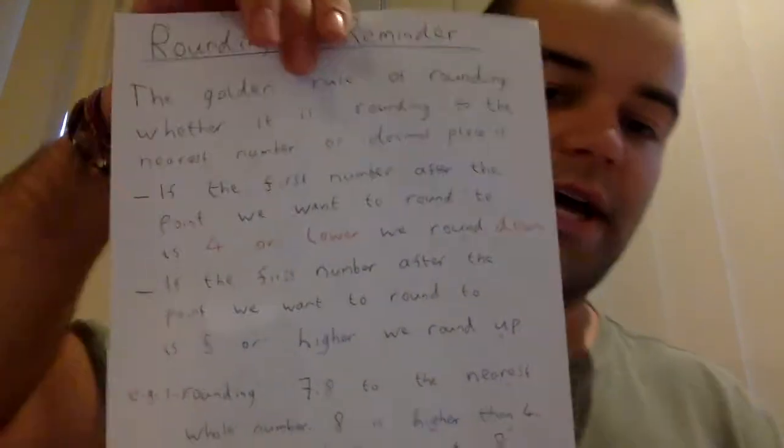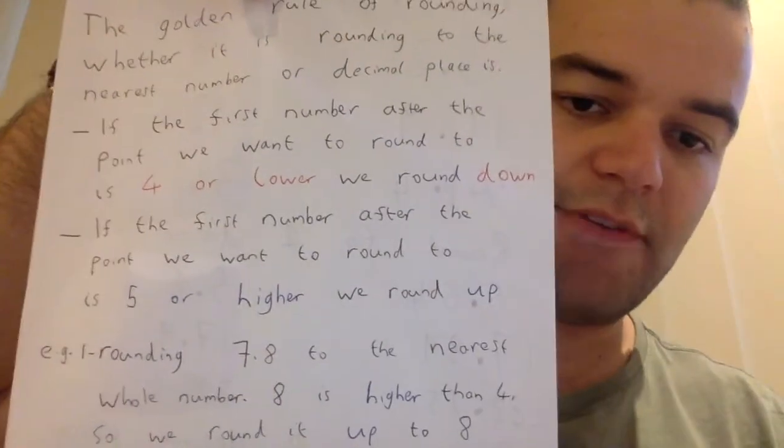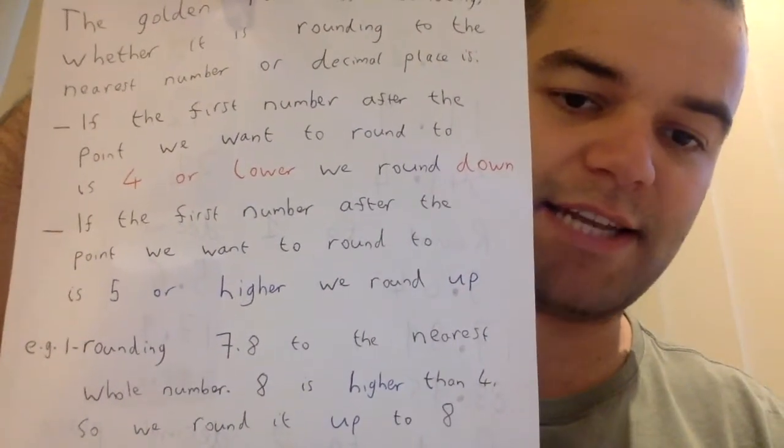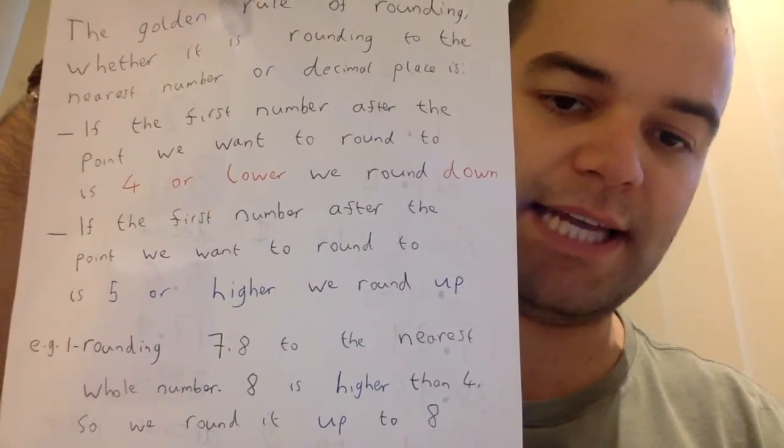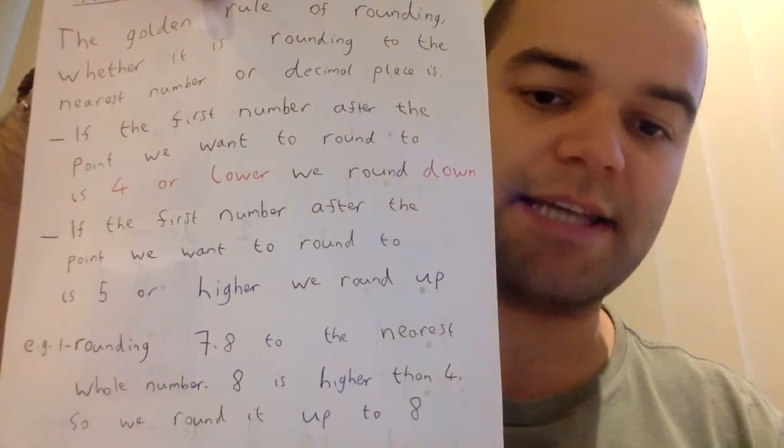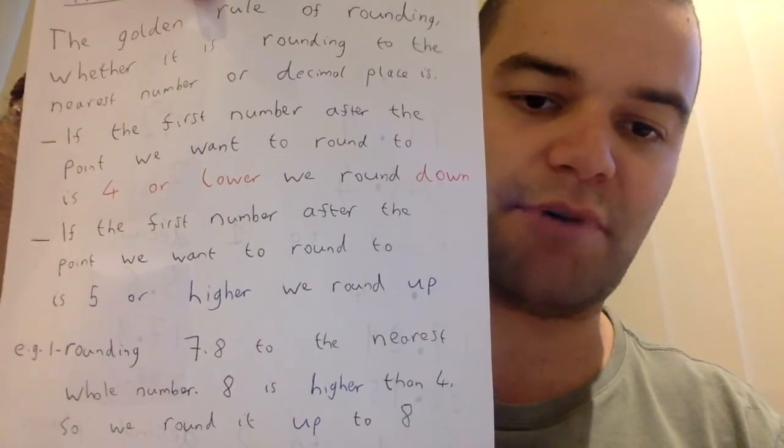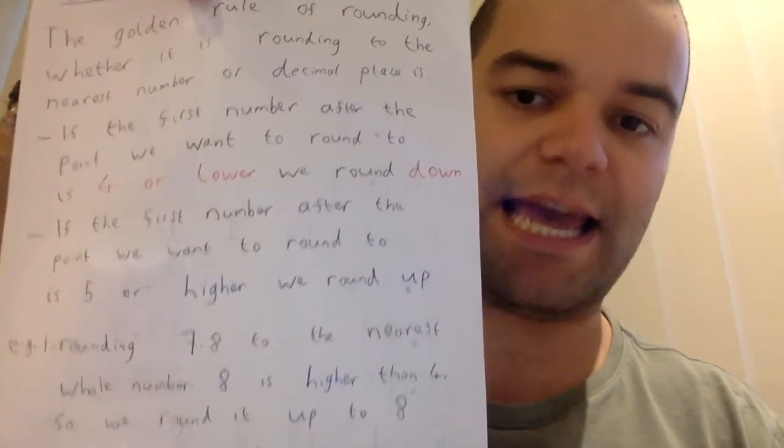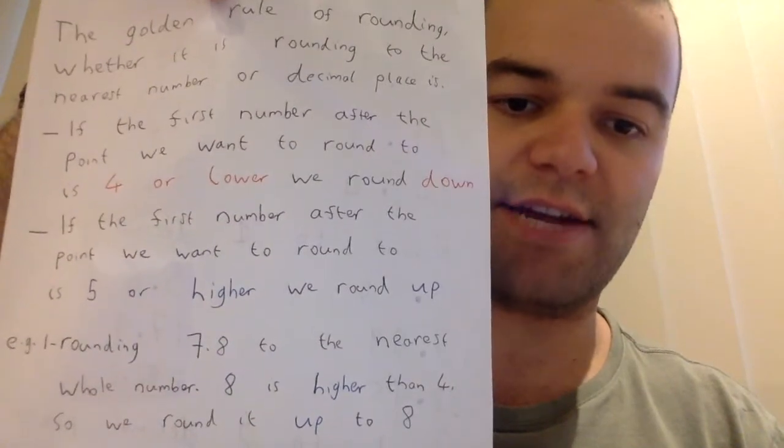So I've got an example here. If you were told to round 7.8 to the nearest whole number, so we focus on that 0.8, so that's higher than four, i.e. it's five or higher. So that means we round it from being 7.8 up to just 8. So that's rounding to the nearest whole number.